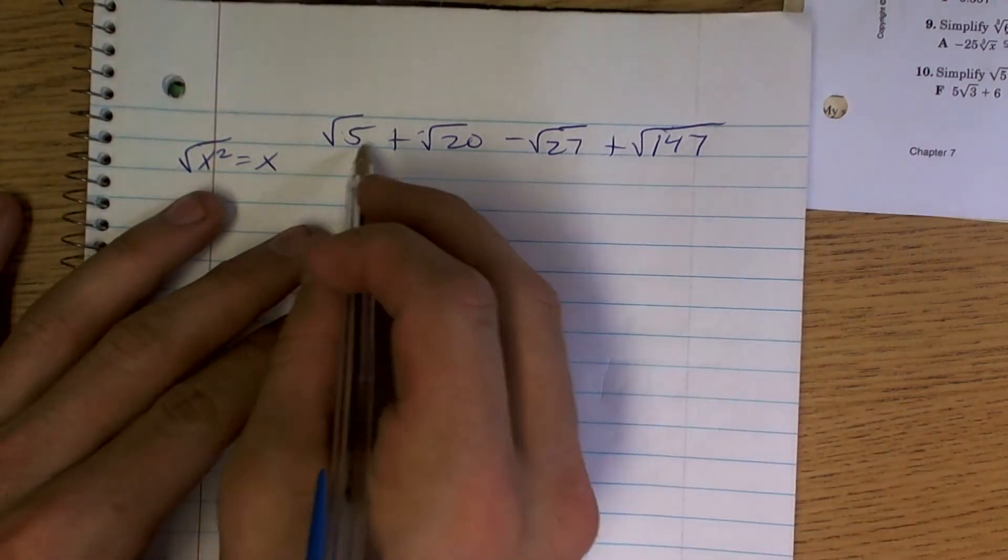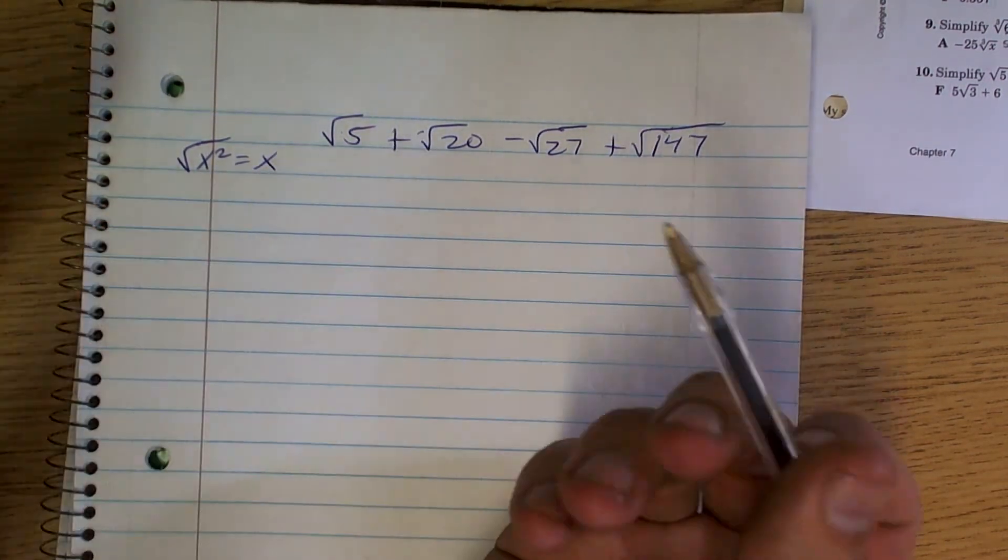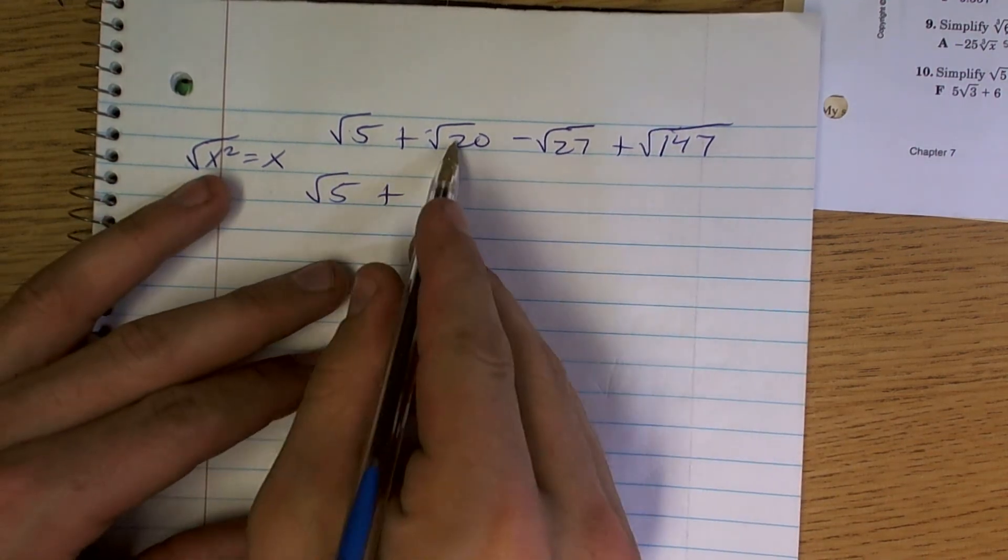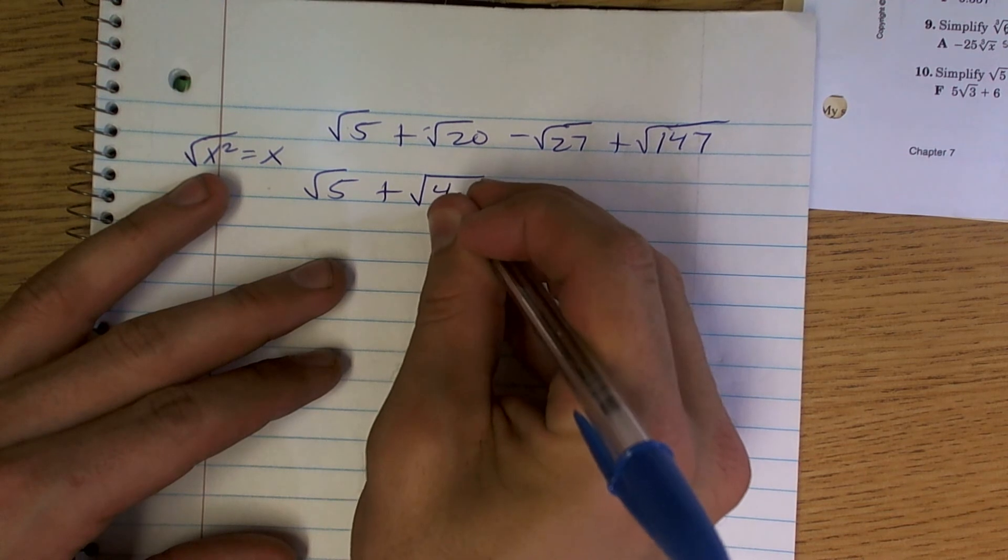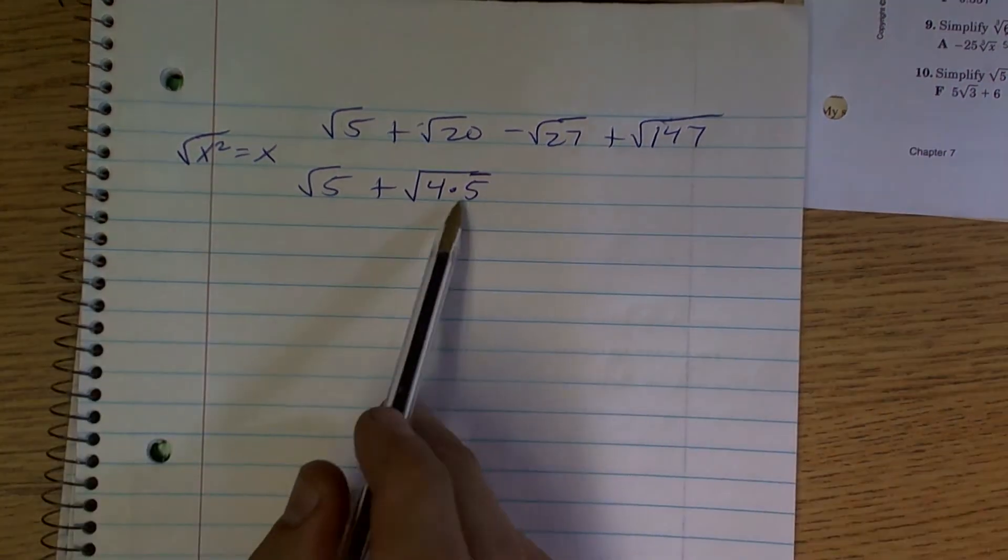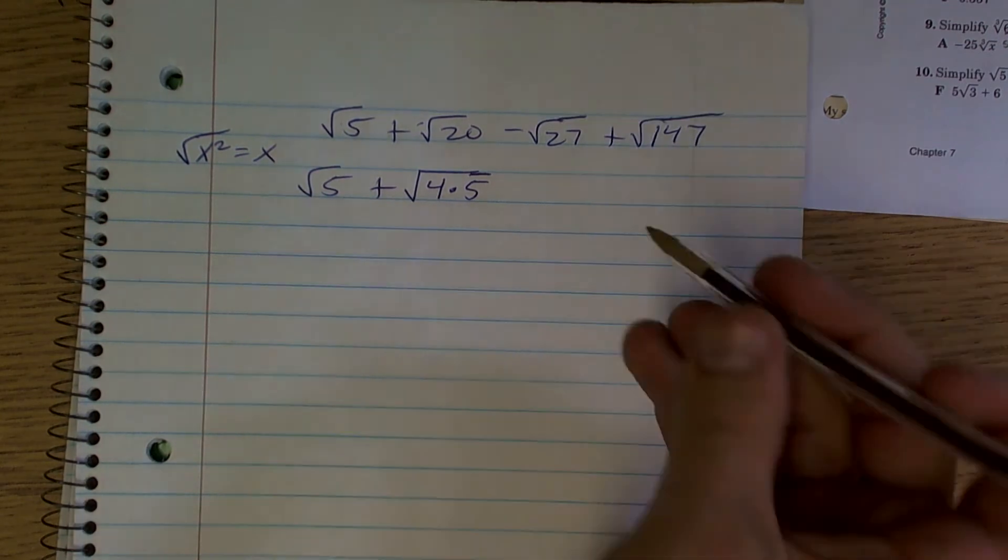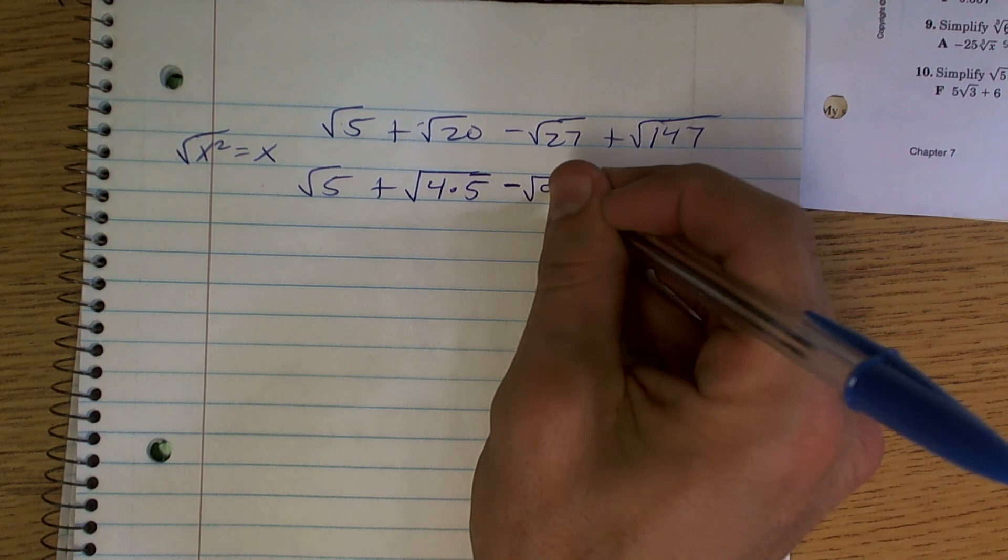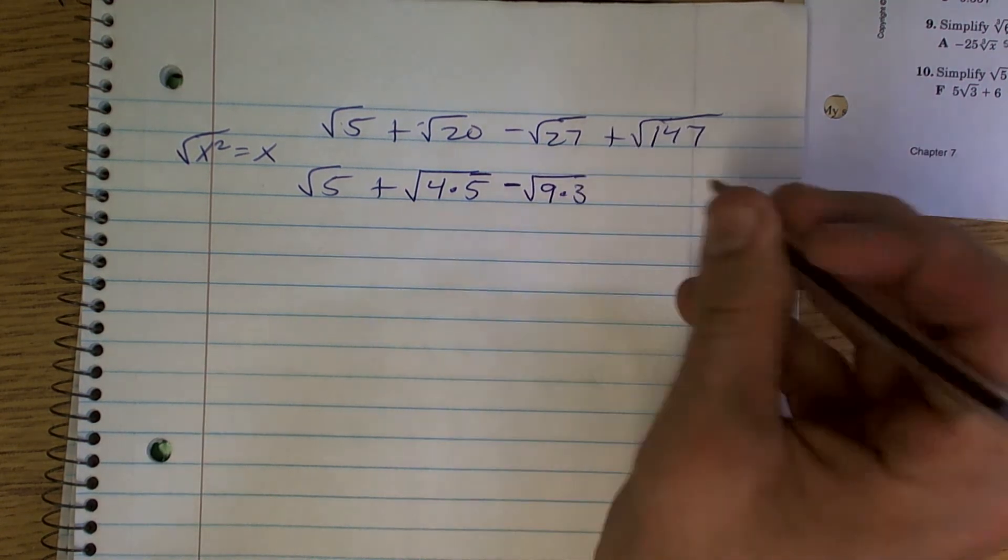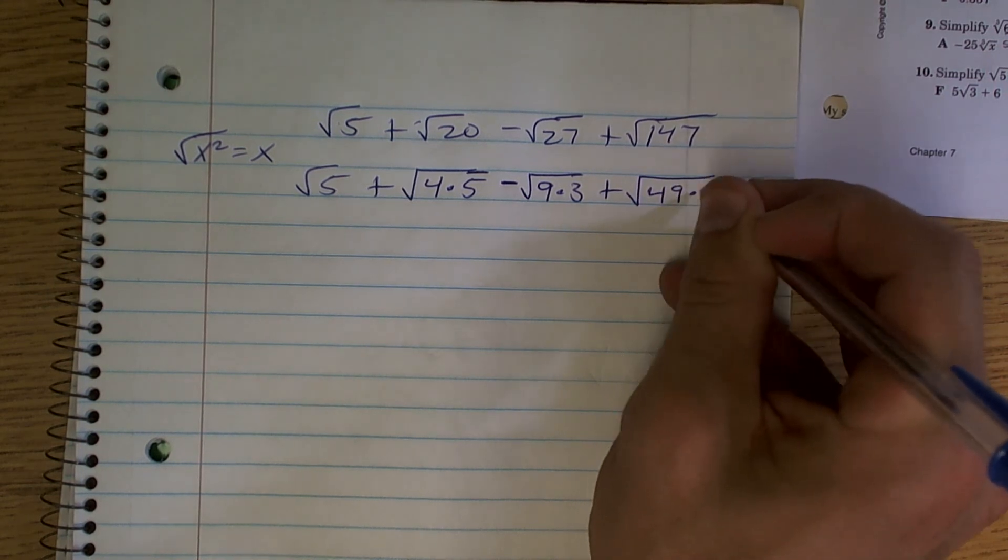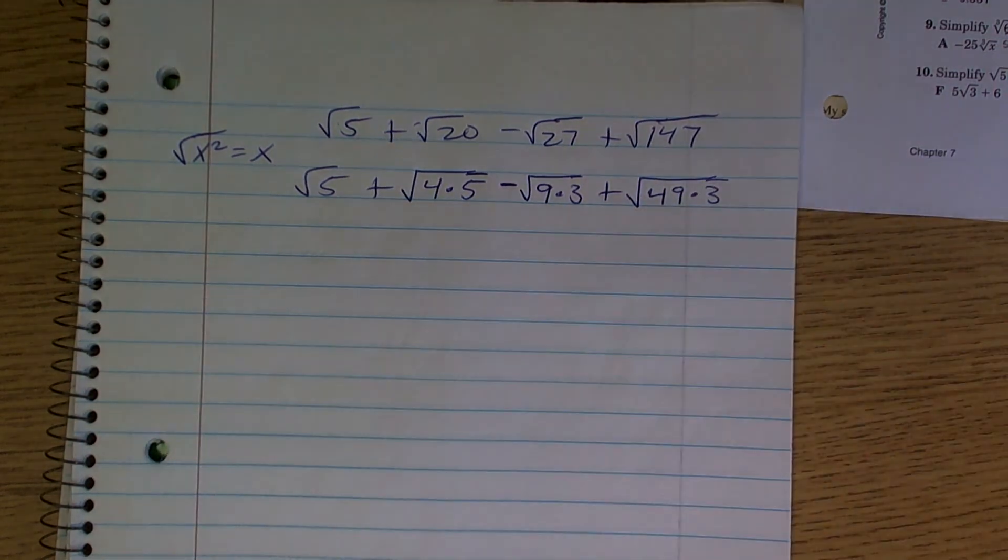So radical 5, I can't write that as a multiplication of any square number, so that's just going to be radical 5. Radical 20, we figured out is 2 times radical 5. I'm just going to go a little bit slower. And then negative 27, you can write as 9 times radical 3, plus 147, we figured out that was 49 times radical 3.